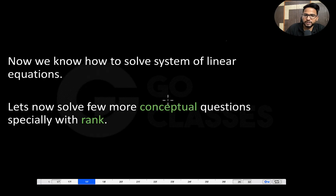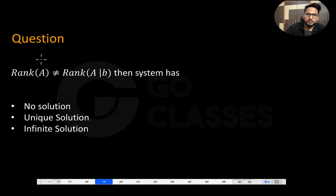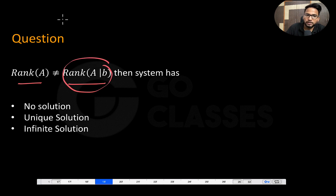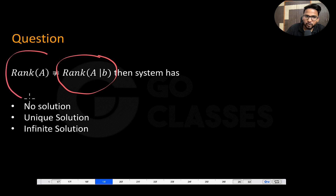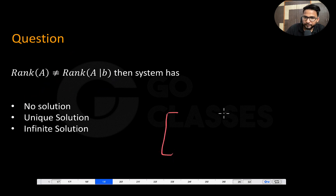Let's solve questions related to rank. Consider this question: if rank of A and rank of the augmented matrix [A|b] are not equal, what can you infer? Let's understand the relation between rank of A and rank of [A|b]. Suppose this is matrix A, and you bring in one more vector b, forming the augmented matrix [A|b].